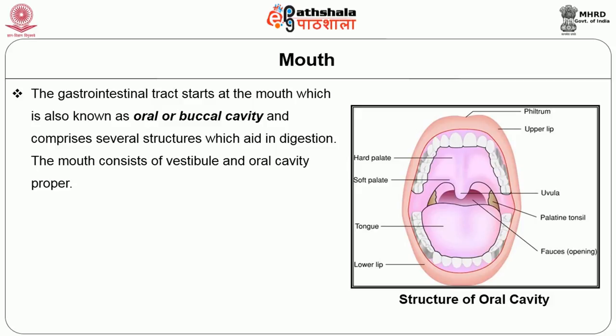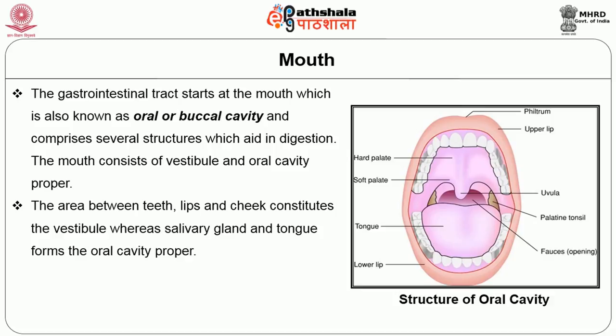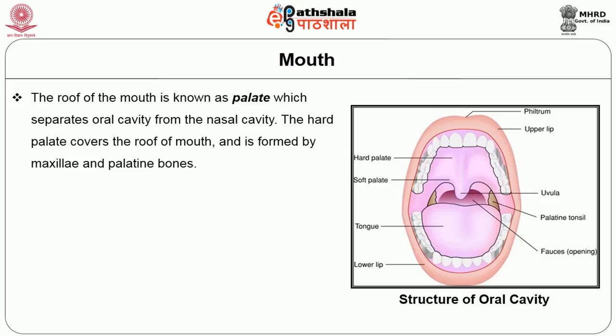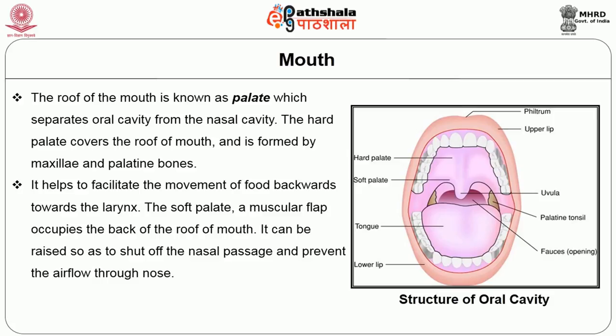The area between the teeth, lips and cheeks constitutes the vestibule, whereas the salivary gland and tongue form the oral cavity proper. The oral cavity is lined with oral mucosa and a mucous membrane that secretes lubricating mucus made up of the glycoprotein mucin. The roof of the mouth is known as the palate, which separates the oral cavity from the nasal cavity. The hard palate covers the roof of the mouth and is formed by the maxilla and palatine bones, helping to facilitate the movement of food backwards towards the larynx.